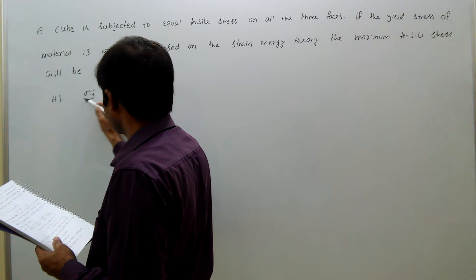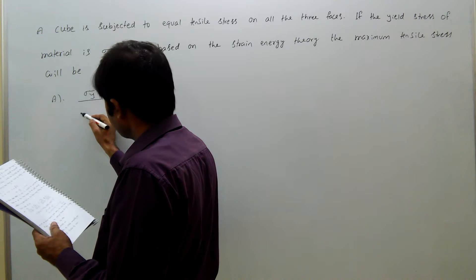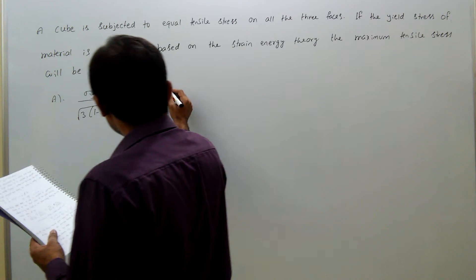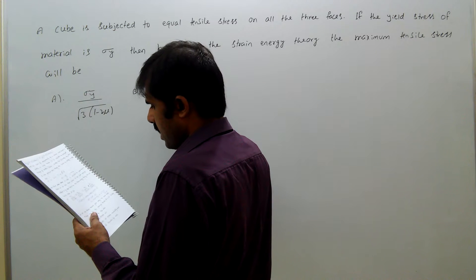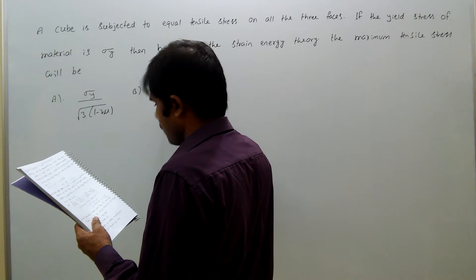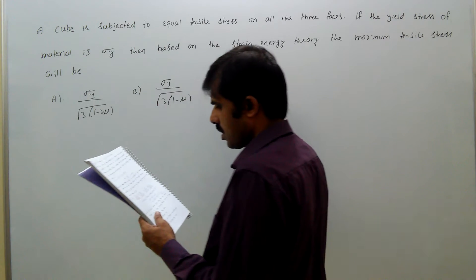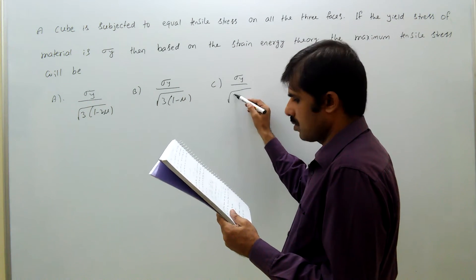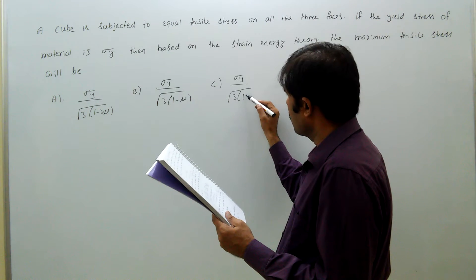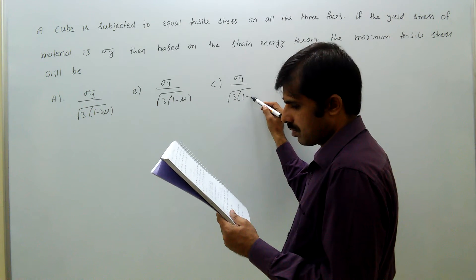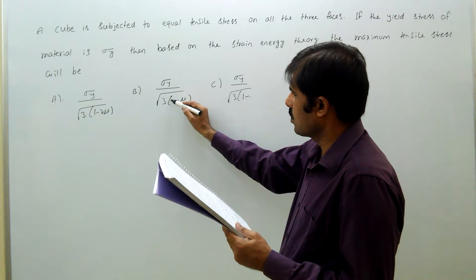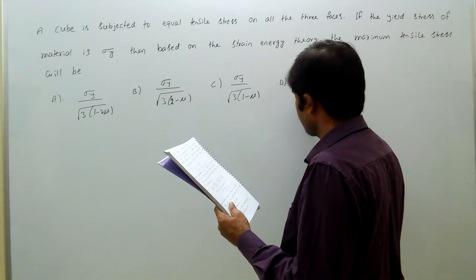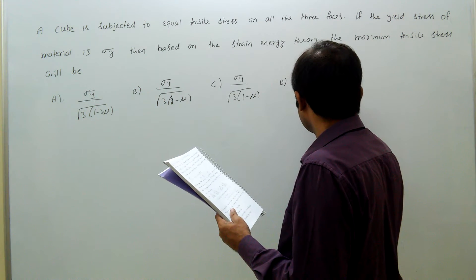Option A: sigma_y divided by root 3 into (1 minus 2*mu). Option B: sigma_y divided by root 3 into (1 minus mu). Option C: sigma_y divided by root 3 into (1 minus 2 minus mu), where (1 minus mu). Option D: sigma_y divided by root 3 into (1 plus mu).